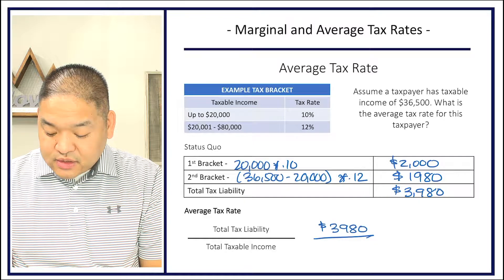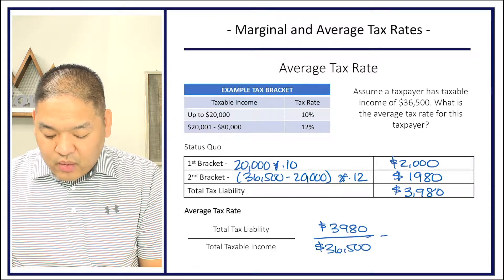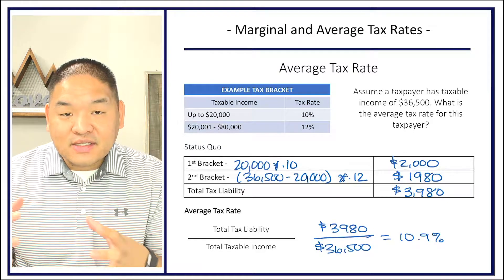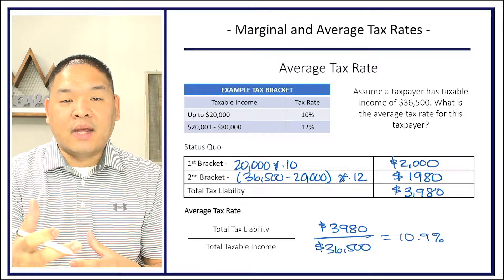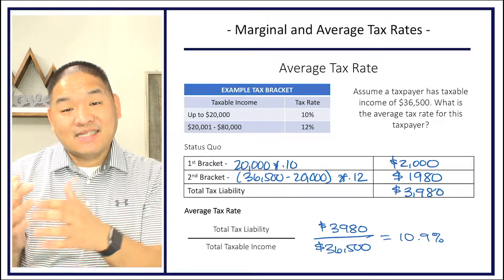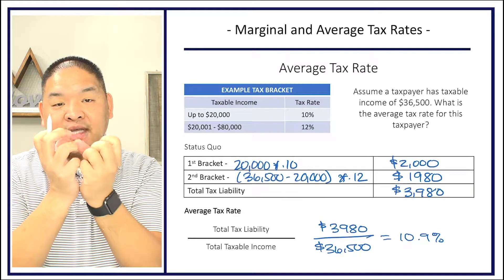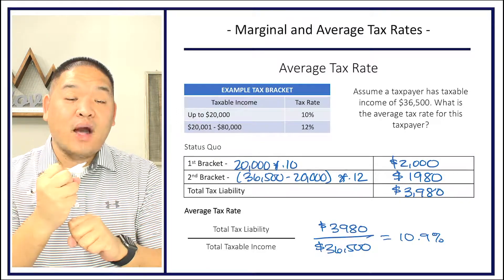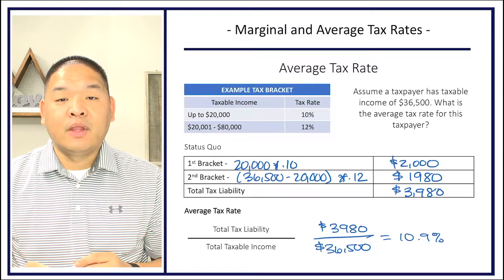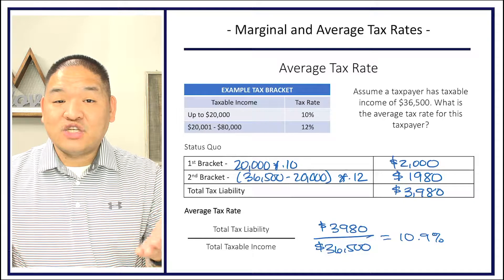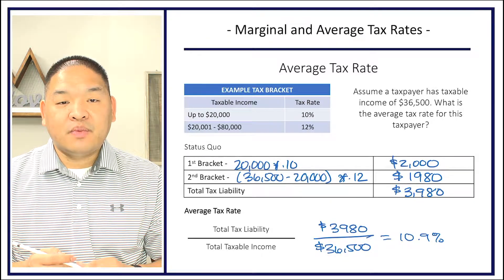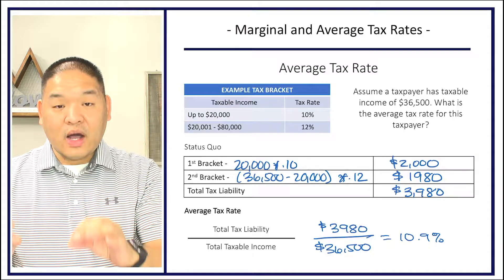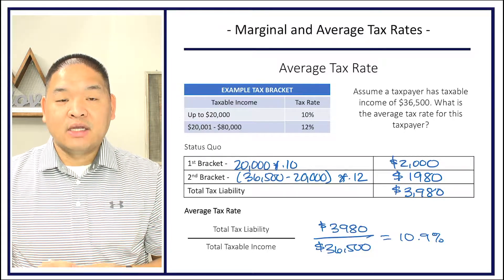With a total tax liability of $3,980 and taxable income of $36,500, the average tax rate is 10.9%. Even though this taxpayer is in the 12% tax bracket, because some of their income is taxed at 10%, it brings their average down to 10.9% — a blended rate between 10% and 12%. This is true for most taxpayers: the marginal tax rate is typically higher than the average.